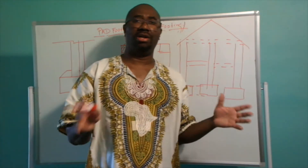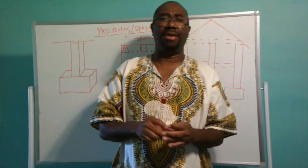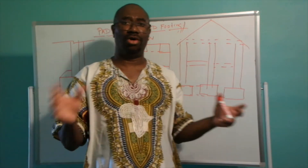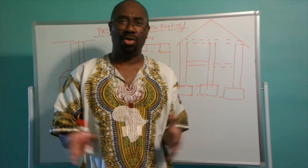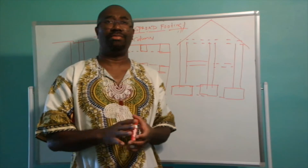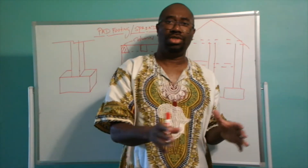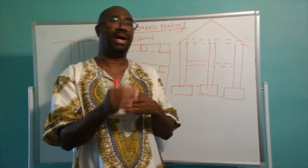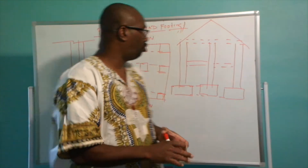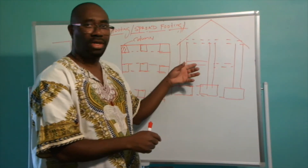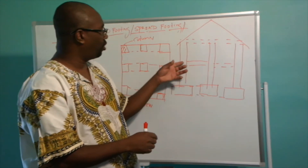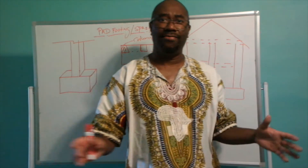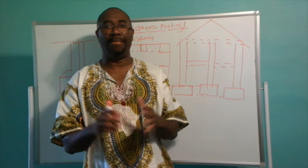A frame structure is a series of columns and beams. Spread footings are used in industrial or commercial buildings where you have heavy loads — for example, a library. The load path functions as follows: floor loads transfer to the beam, the beam transfers to the column, and the column transfers to the footing, which spreads the load evenly and uniformly across the soil with minimum stress.